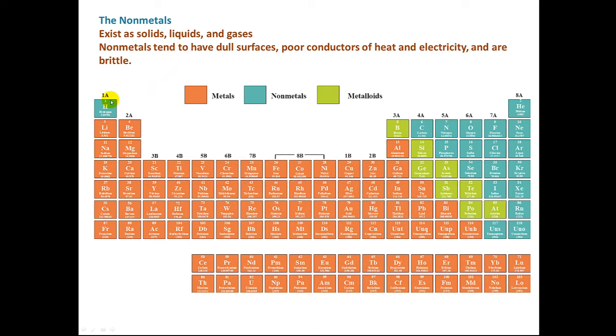Let's take a look at the nonmetals. The nonmetals are in this blue-green. Nonmetals exist as solids, liquids, and gases. For example, carbon is a solid. Nitrogen and oxygen are gases. Fluorine and chlorine are gases. We have sulfur, which is a solid. Iodine is a solid. Remember, Group 8A are the noble gases, so these are all gases. So they exist as solids, liquids, and gases. Nonmetals tend to have dull surfaces—the solids do—and they're poor conductors of heat and electricity. And the solids happen to be very, very brittle.